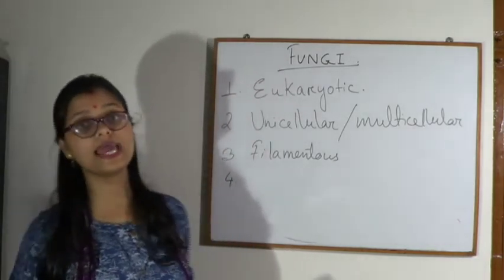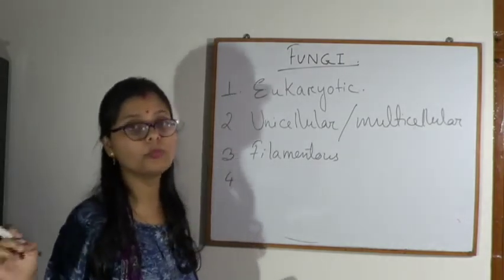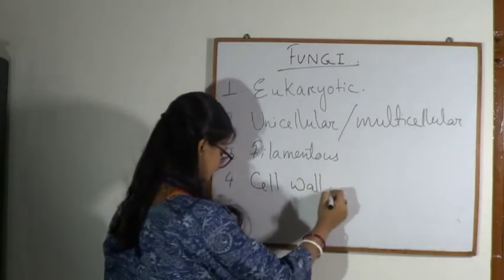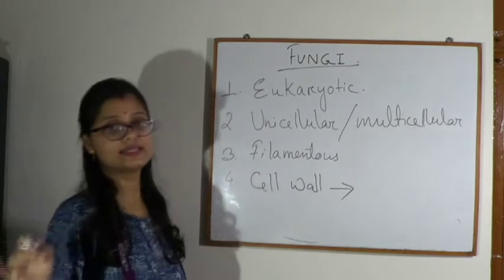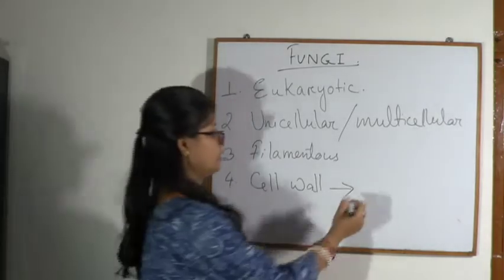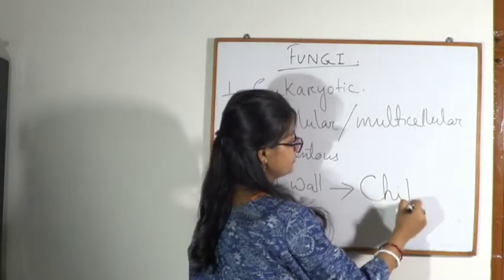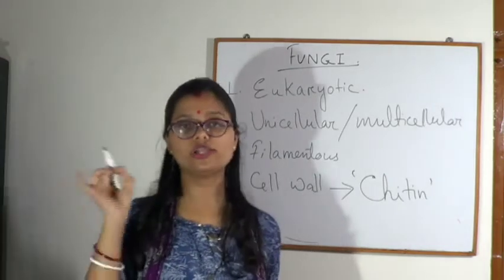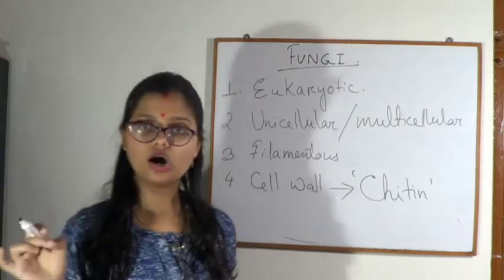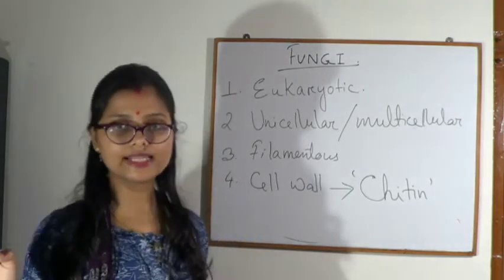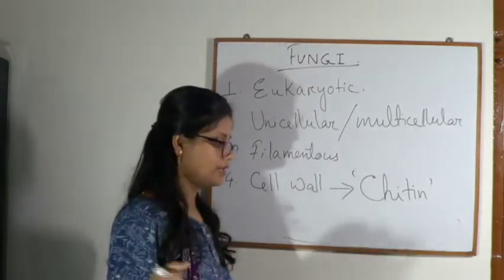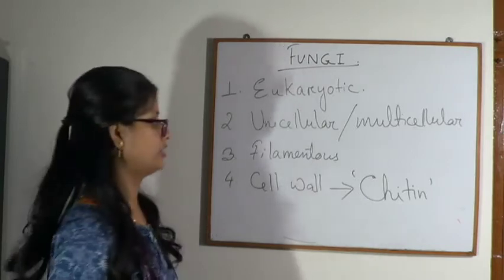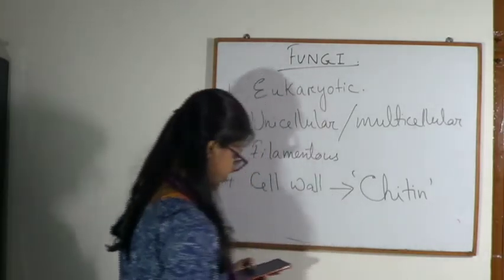Fungi possess a cell wall. The cell wall of fungi is made up of chitin. This is a very important point — remember that the cell wall of fungi is made of chitin.